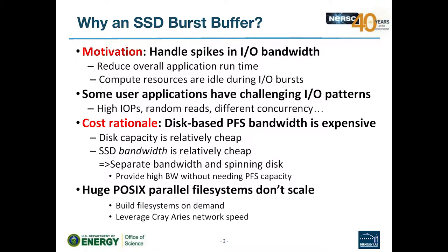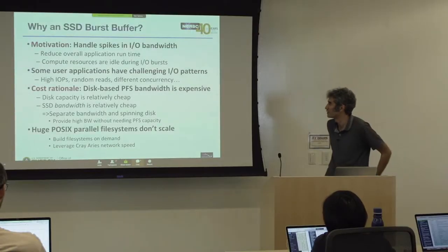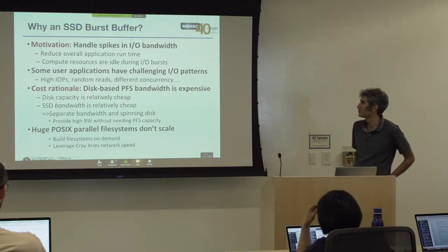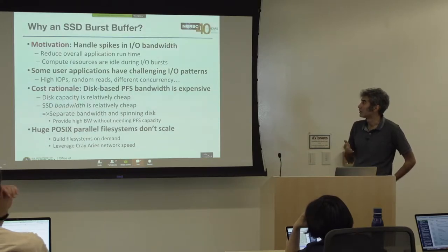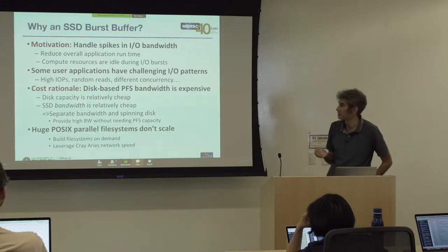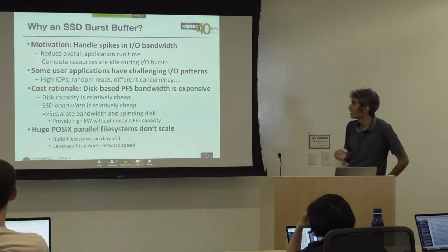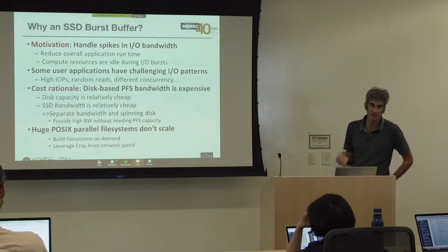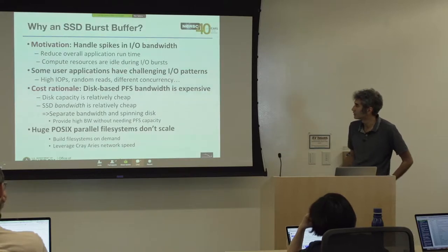As well as contiguous I/O — the really high bandwidth stuff — there's also what's sometimes described as challenging or bad I/O patterns: large amounts of random reading across a file, high levels of I/O operations, and various concurrency of jobs accessing files.